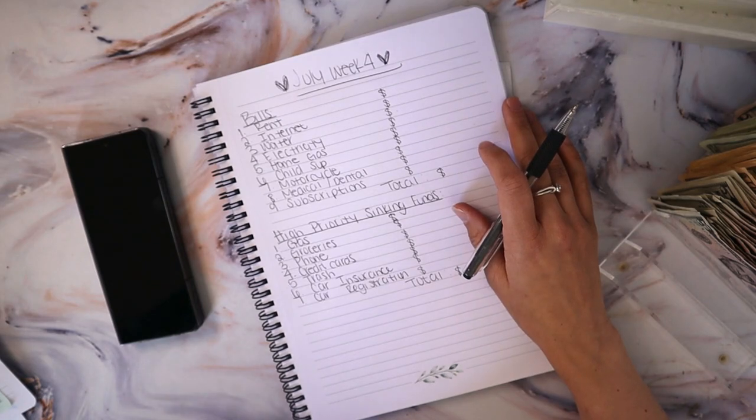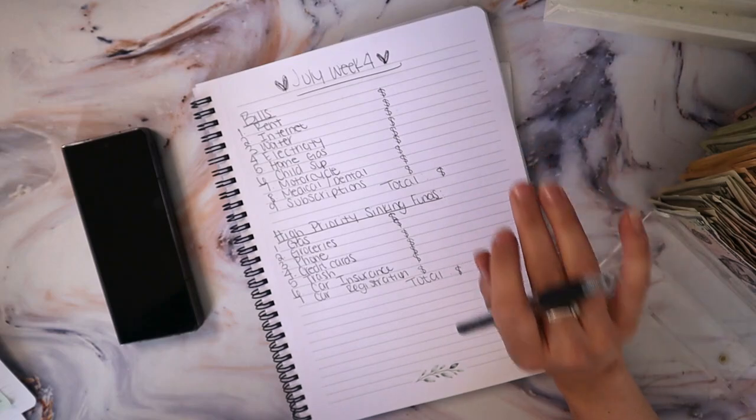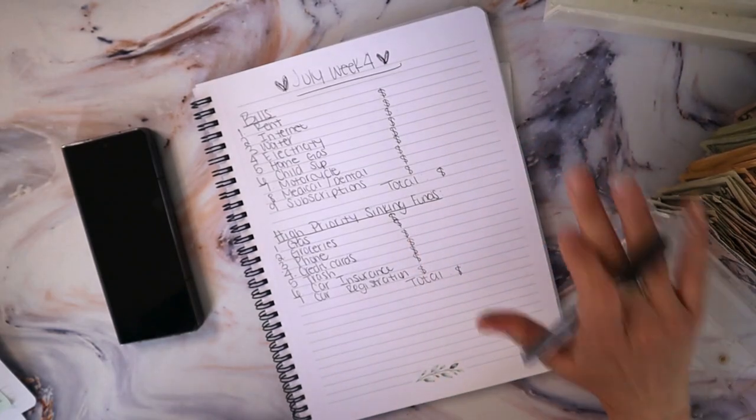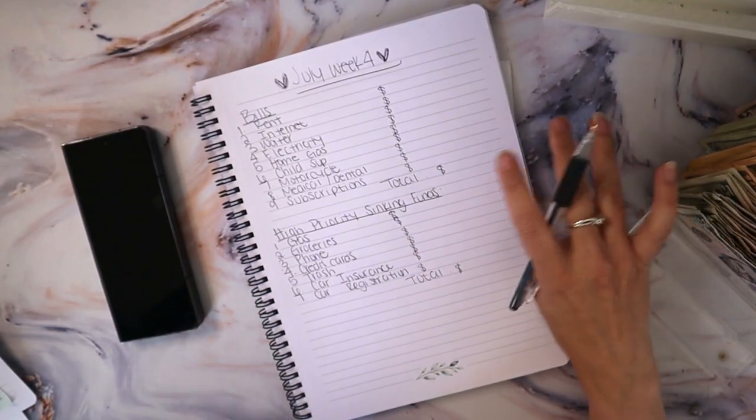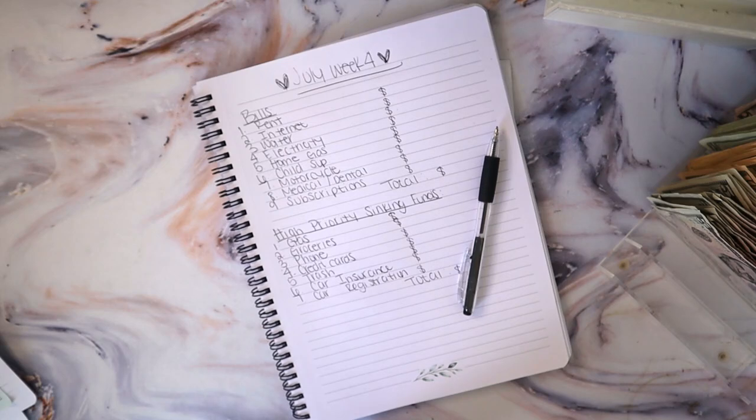So today we are doing my budget with me for July week four. So we are going to be working with my cash tips that I made for the previous week plus what my husband brought home from his income from the week. So let's see what we are working with.